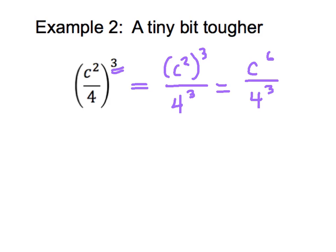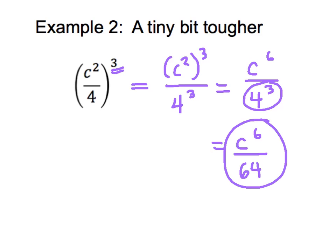If we're going to leave our answer in exponential form, we could stop right here. However, if we would like to, since our numerical exponents we can calculate: c to the sixth power over four times four times four, which is 64. There's our final answer.